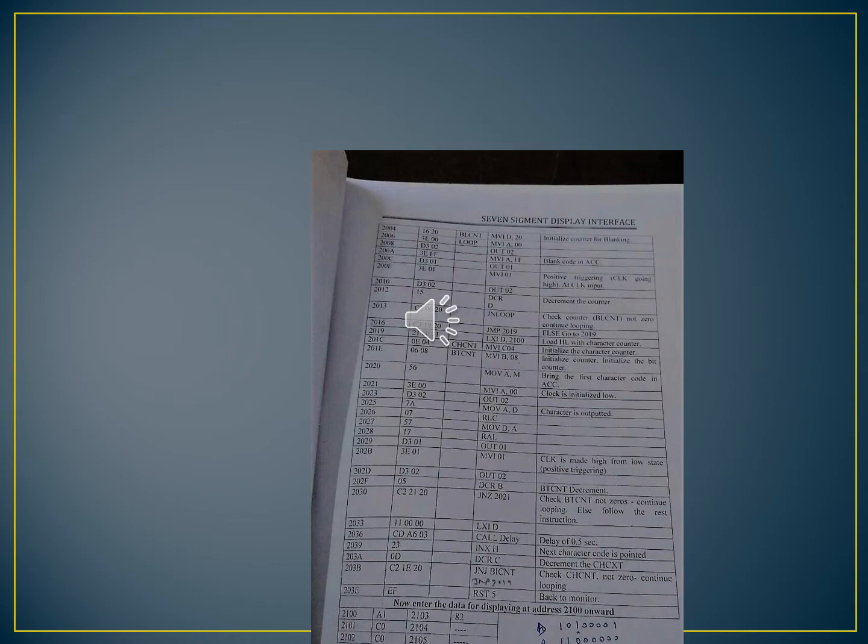Specific code that is memory address 2100 is A1, memory address 2101 is C0, memory address 2102 C0, memory address 2103 83, this will depict good in the seven segment module and that I have showed in the experiment. In an experiment, another thing that I have displayed is life's code, which is of nine characters.